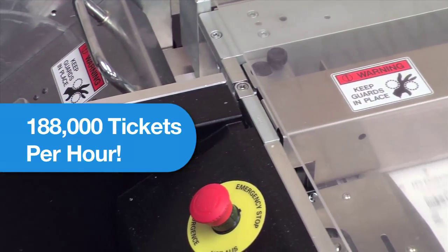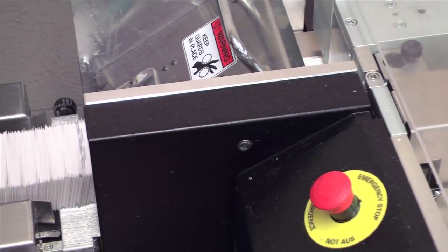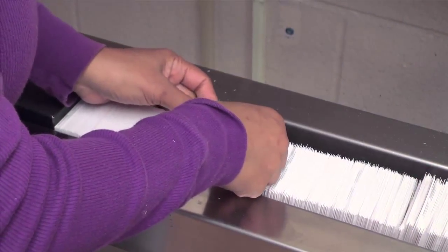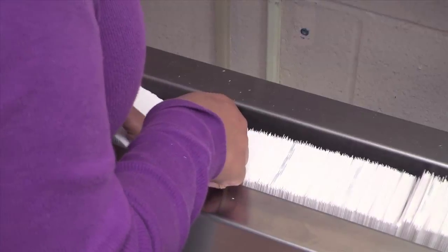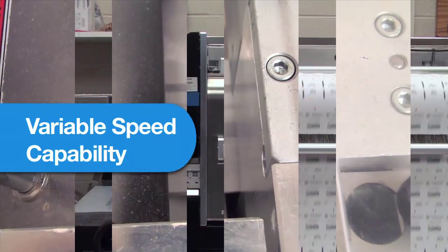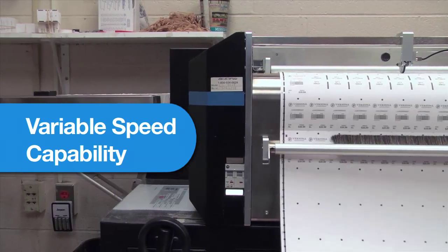The CS9018 is capable of processing 188,000 tickets per hour. Black separator bars printed on the first and last ticket of each batch enables operators to quickly separate and dispatch ticket types. The CS9018 can also be programmed to run at various speeds to fit your operation needs.